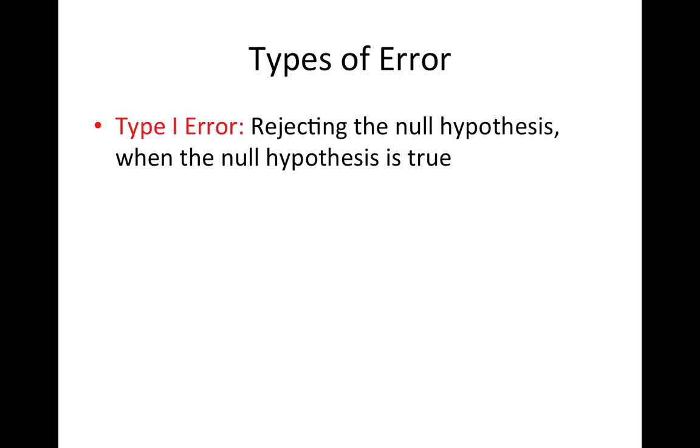Type 1 error, by definition, is the error you make when you reject the null hypothesis when actually the null hypothesis was true. So the truth is that there's nothing going on, but you've decided to reject the null hypothesis because your p-value is less than whatever arbitrary cutoff you've selected.